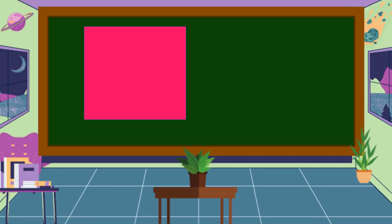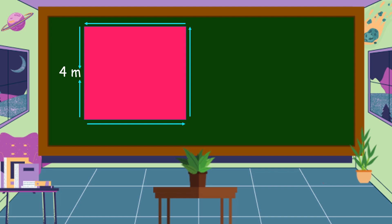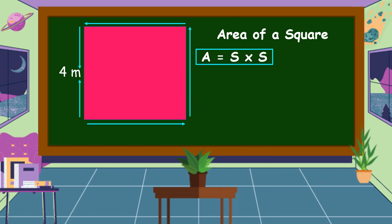What plane figure is this? This is a square. Suppose that one side of this square is 4 meters. Find the area of this square. The formula for finding the area of a square is side times side. Our side here is 4 meters times 4 meters, which is equal to 16 meters squared. This is the area of the square.